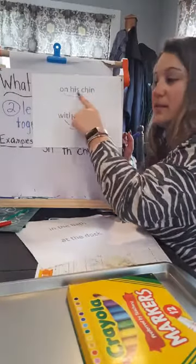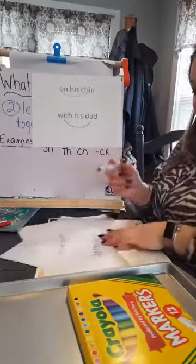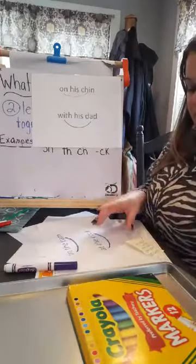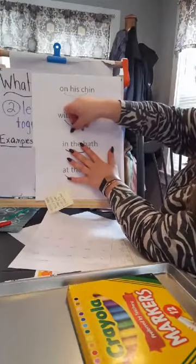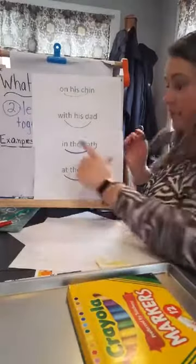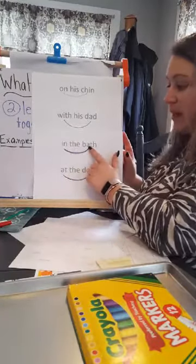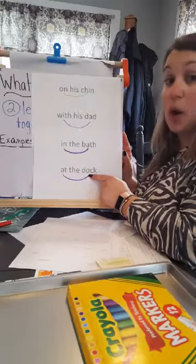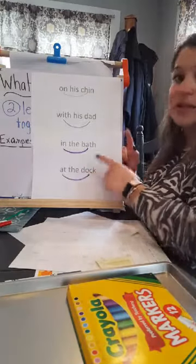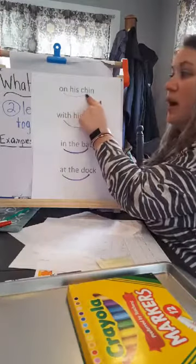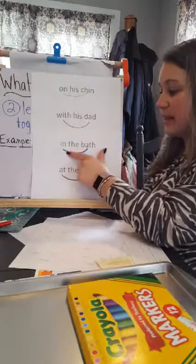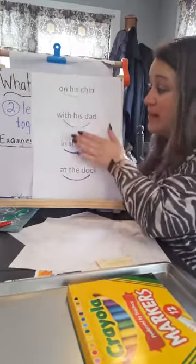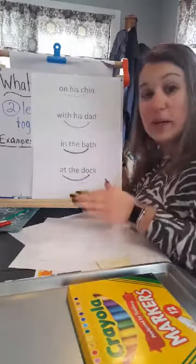Let's practice those again. On his chin. With his dad. Nice job. Here we go. We have a couple more to practice. I hope you can see these. The next one. In the bath. In the bath. In the bath. Good. At the dock. At the dock. A dock is a place that's in the water where you would put a boat. Okay. At the dock. Let's practice these again. On his chin. With his dad. In the bath. At the dock. Nice job, everyone. Good job. Fluently reading. Practice these fluently. Don't read them like a robot. Read them fluently. Okay.